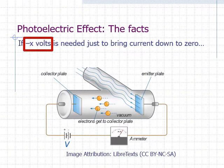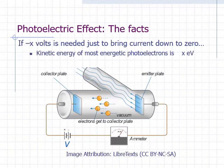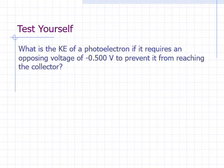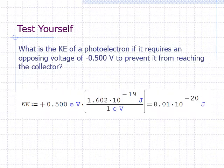If negative x is the stopping voltage, then we can say that the kinetic energy of the most energetic photoelectrons is x electron volts. What is the kinetic energy of a photoelectron if it requires an opposing voltage of negative 0.500 volts to prevent it from reaching the collector? The kinetic energy is positive 0.500 electron volts or 8.01 times 10 to the negative 20 joules.